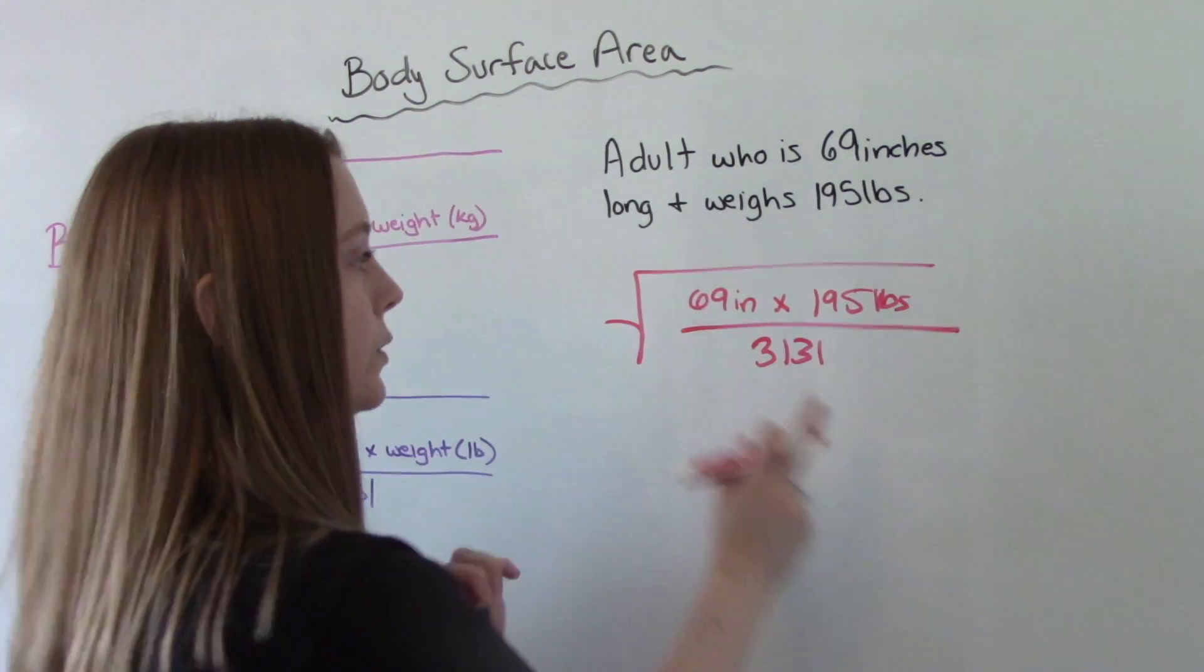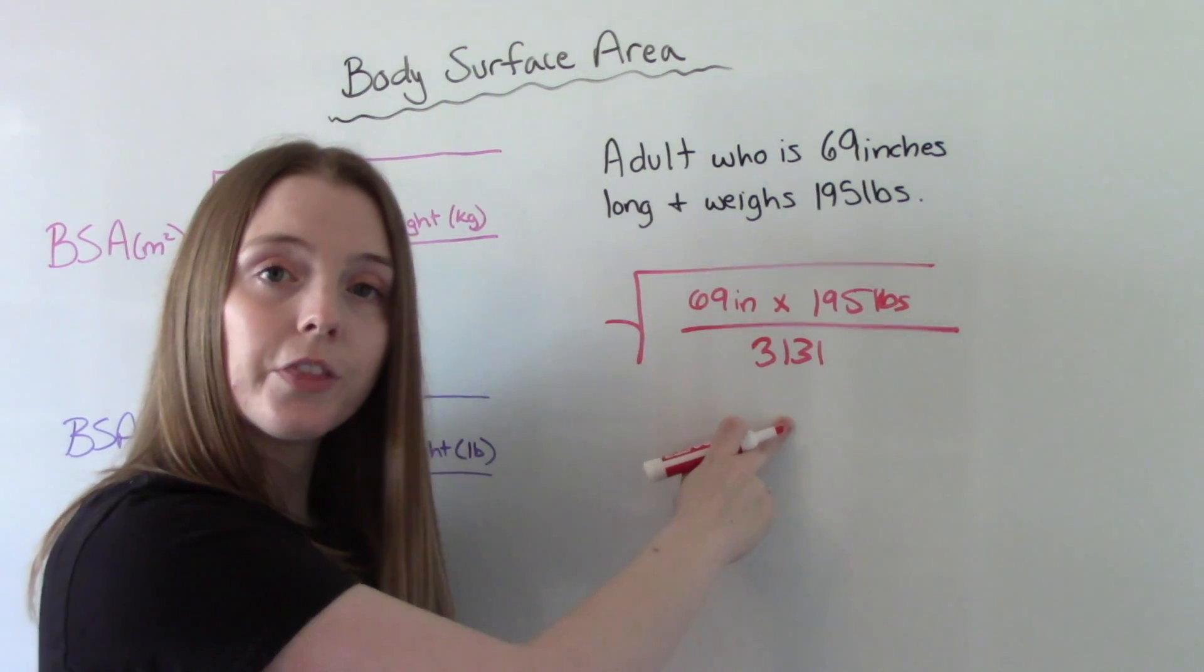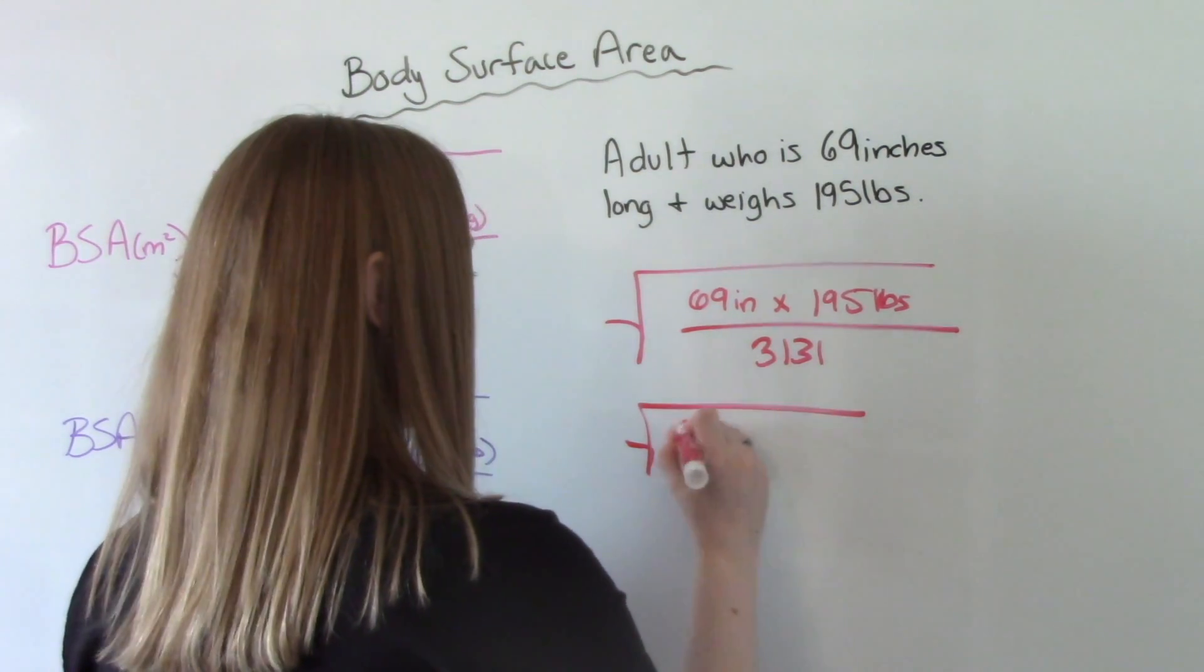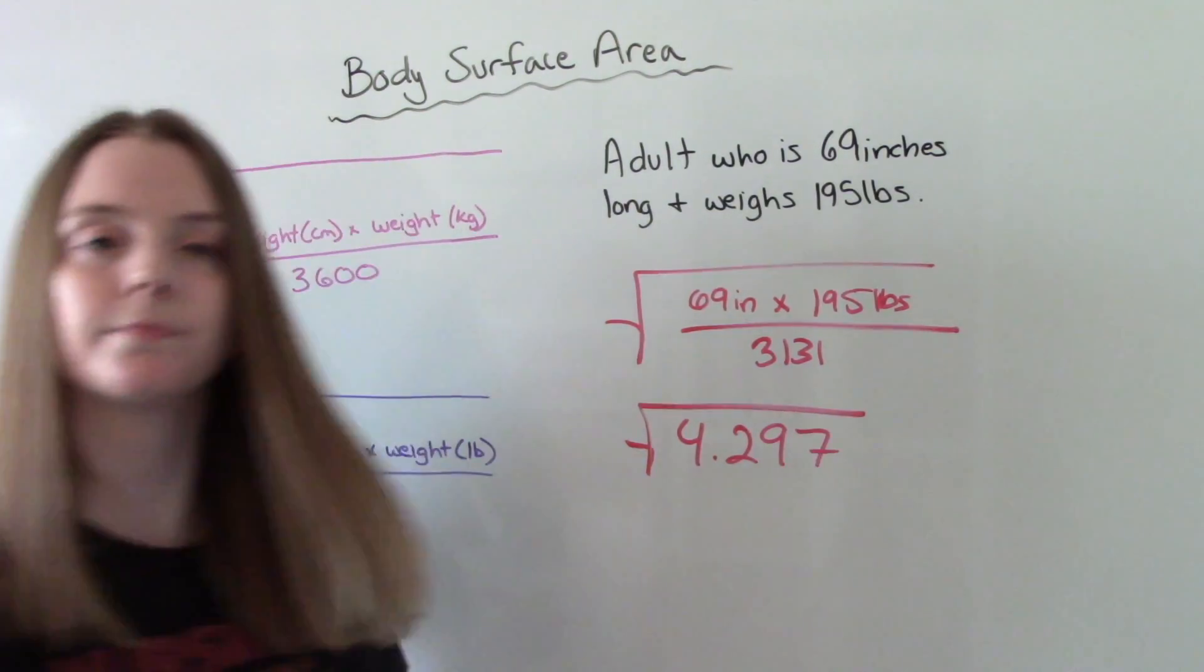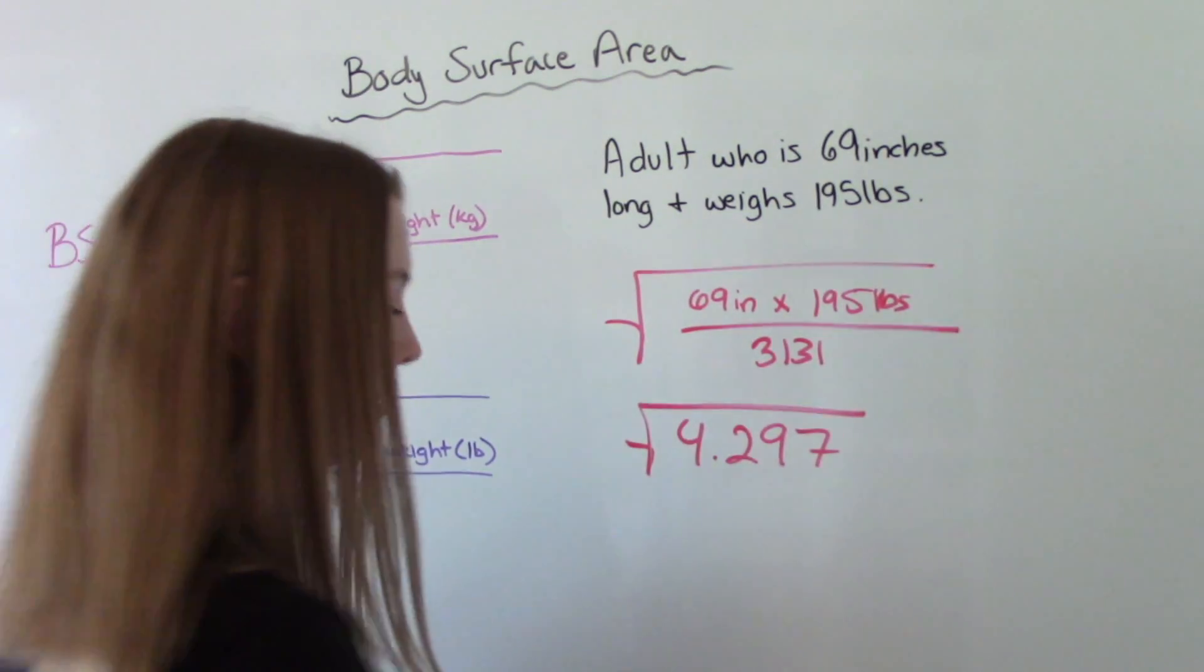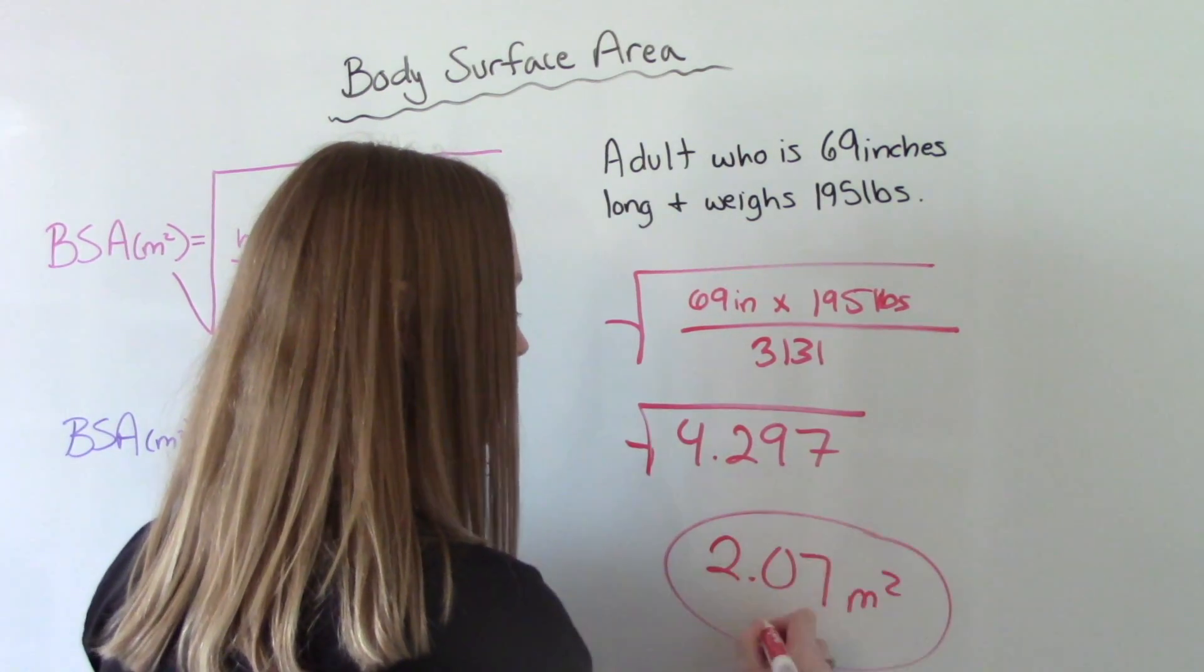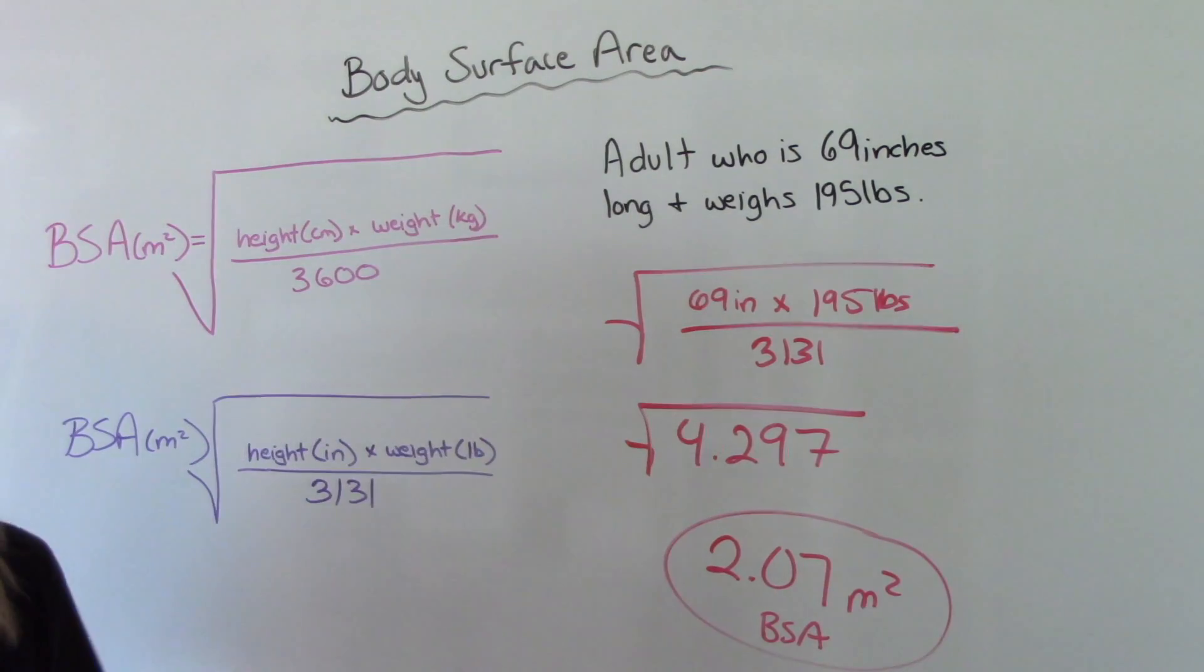So once we do 69 times 195 divided by 3,131, we get the square root of 4.297. And then the final step is putting this in your calculator. And then we get 2.07 m squared. So this is our body surface area. This is the answer to this question.